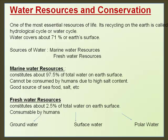One of the most essential resources of life is water. Its recycling on the earth is called the hydrological cycle or water cycle. Water covers about 71% of the earth's surface. Sources of water are marine water resources, constituting about 97.5% of total water, and fresh water resources, constituting about 2.5%, which include groundwater, surface water, and polar water.